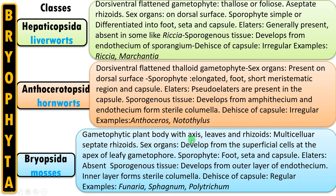Let us summarize the characteristics of Bryopsida: gametophytic plant body with axis, leaves, and rhizoids — that's why it is called the most advanced group. Multicellular septate rhizoids, well-developed for attachment and absorption. Sex organs develop on the superficial cells at the apex of the leafy gametophore. Sporophyte consists of foot, seta, and capsule. Elaters are absent. Capsule has a complex structure with a well-developed spore dispersal mechanism. Sporogenous tissue develops from the outer layer of endothecium; the inner layer forms sterile columella. Dehiscence of capsule is regular. Examples include Funaria, Sphagnum, and Polytrichum.